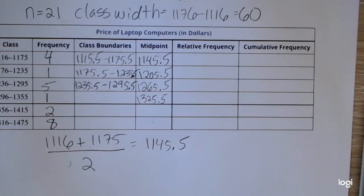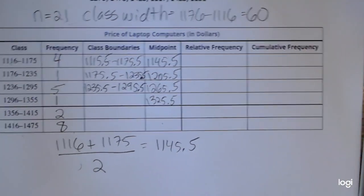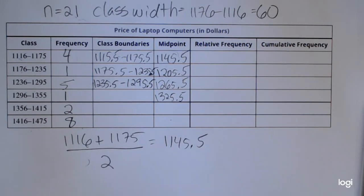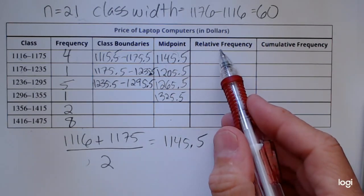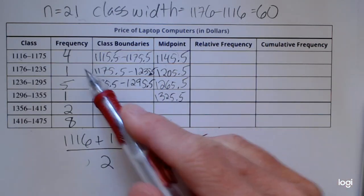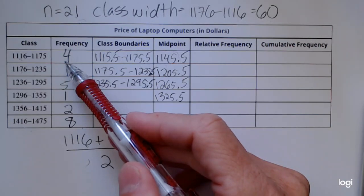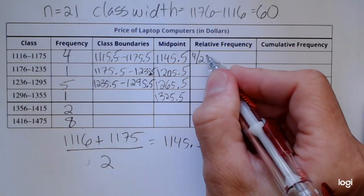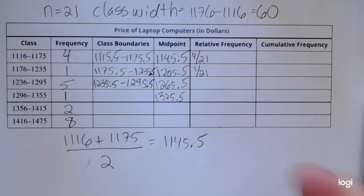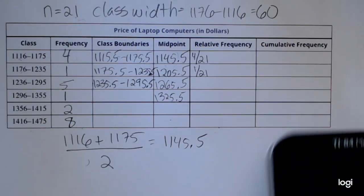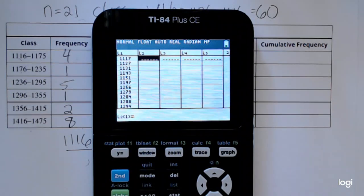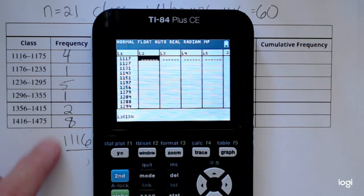Now the relative frequency gives you in decimal form the percent of the values that fall in each class. So I know that there's 21 values. That's going to be my denominator for all of the values in this column. To find the relative frequency for the first class, I would take four and divide it by 21. For the second class, one divided by 21, and so on. It's not that hard of a calculation, but I want to have my calculator do this for me.